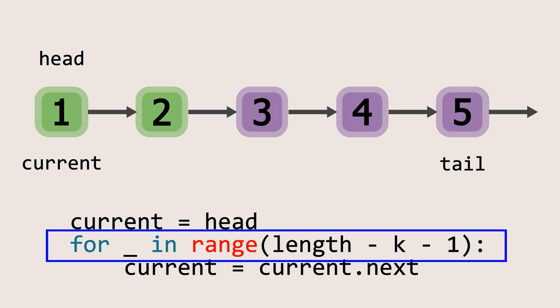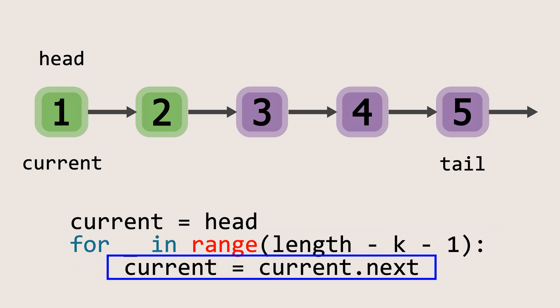Now pause and think about it. This loop helps us to stop exactly one step before the part of the list we want to rotate. For our example, this will run only 1 time. And after this loop, the current pointer will be set to the element just before the rotation point.